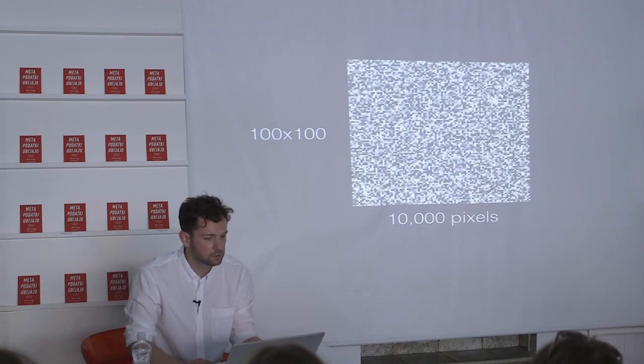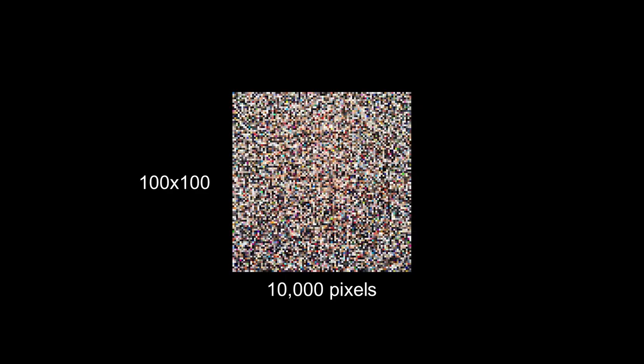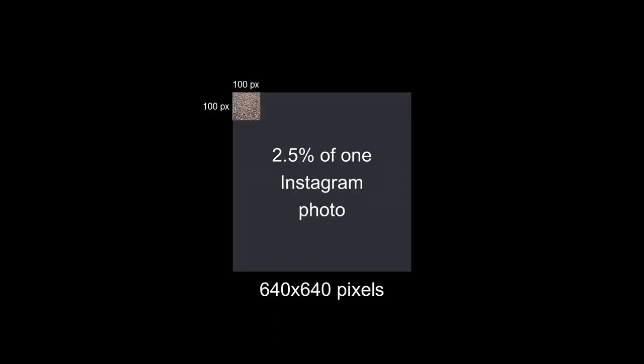Of course, if you increase that to about 100, you have all the information you need. 100x100 is a lot of pixel information, but it's not a lot compared to what we normally capture with our phones or post online. If we took a small sample of what we post to Instagram, we're looking at about 2.5% — and with Instagram's larger sizes now, maybe 1.5%. So what can you do with that information — 100x100 pixels, 2.5% of a single Instagram photo?